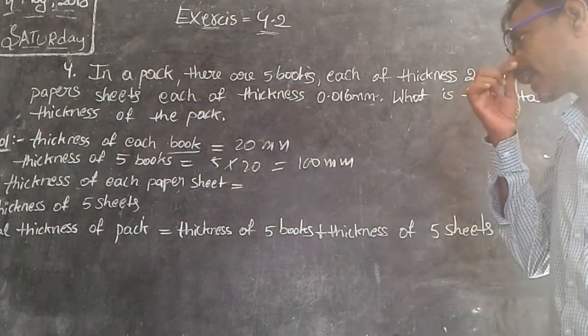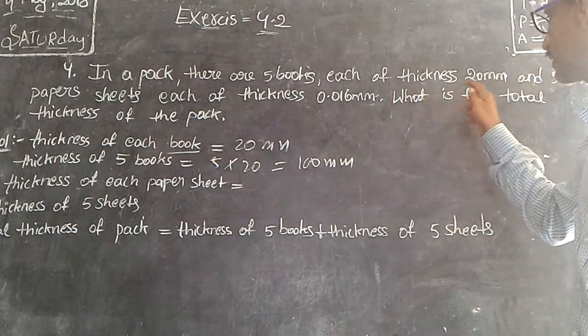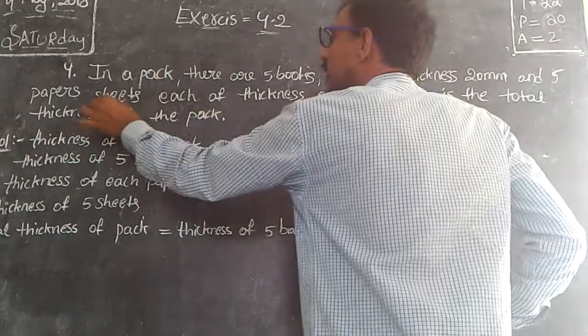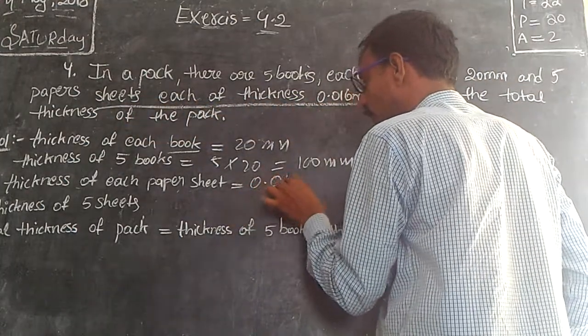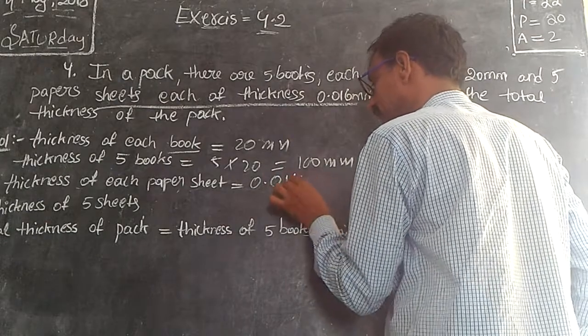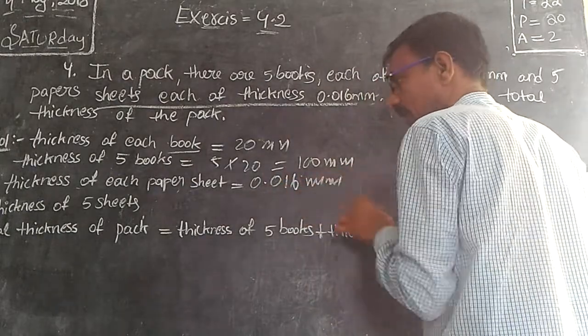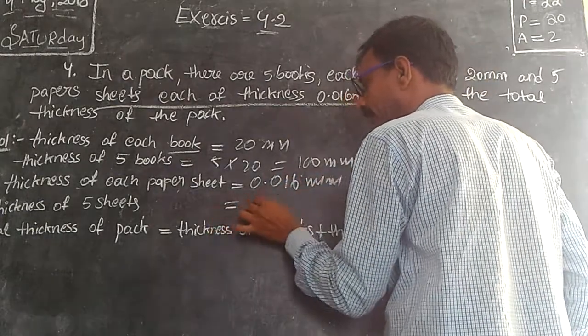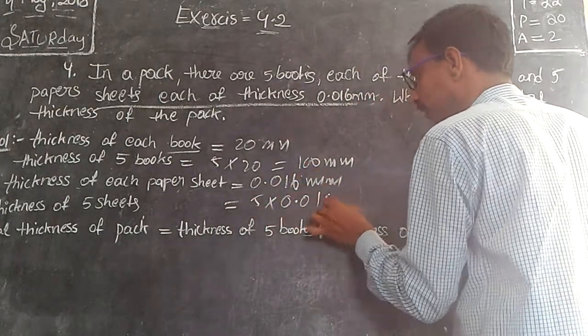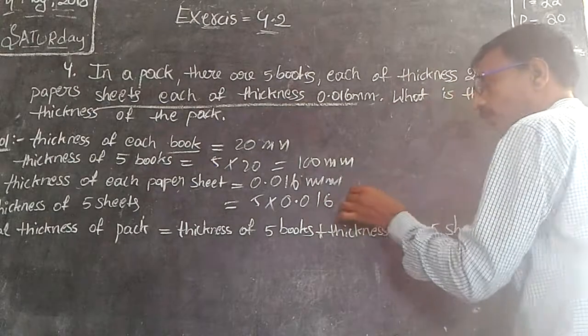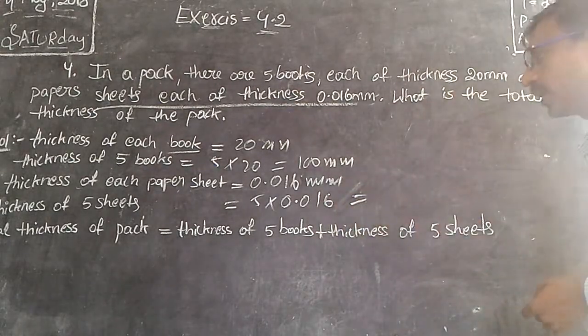The thickness of each paper sheet is 0.016 mm. 5 times 0.016 mm equals 0.080 mm.